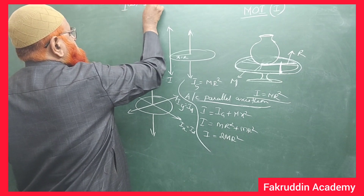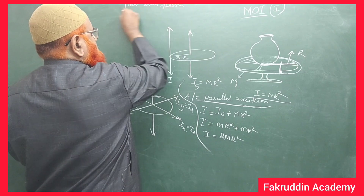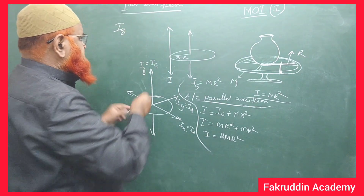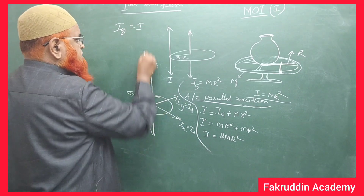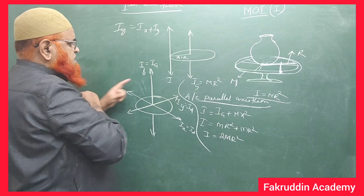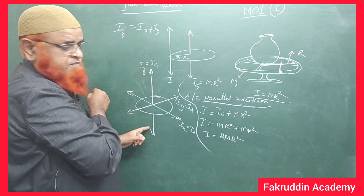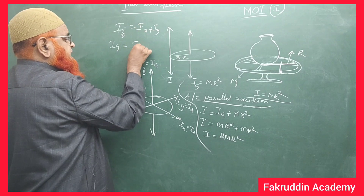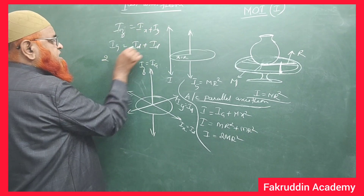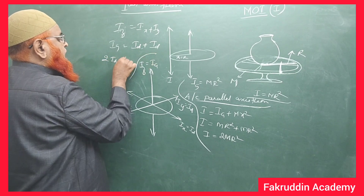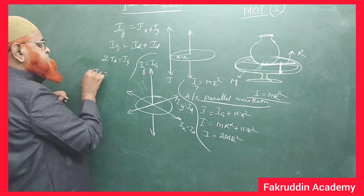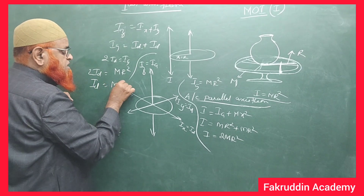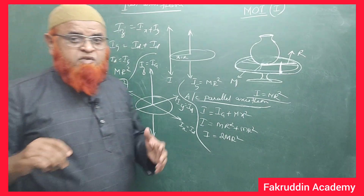According to the perpendicular axis theorem, the moment of inertia with respect to the z-axis equals the sum of the moments of inertia with respect to the x-axis and y-axis: Iz = Ix + Iy. Since Iz = Ig = mr², and Ix = Iy = Id, we get mr² = 2Id, so Id = mr²/2. The moment of inertia of a ring with respect to its diameter is mr²/2.